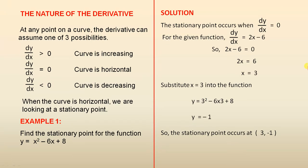So if we substitute x equals 3 into the function, we get this line here, which gives us y equals negative 1. So the stationary point occurs at (3, -1).